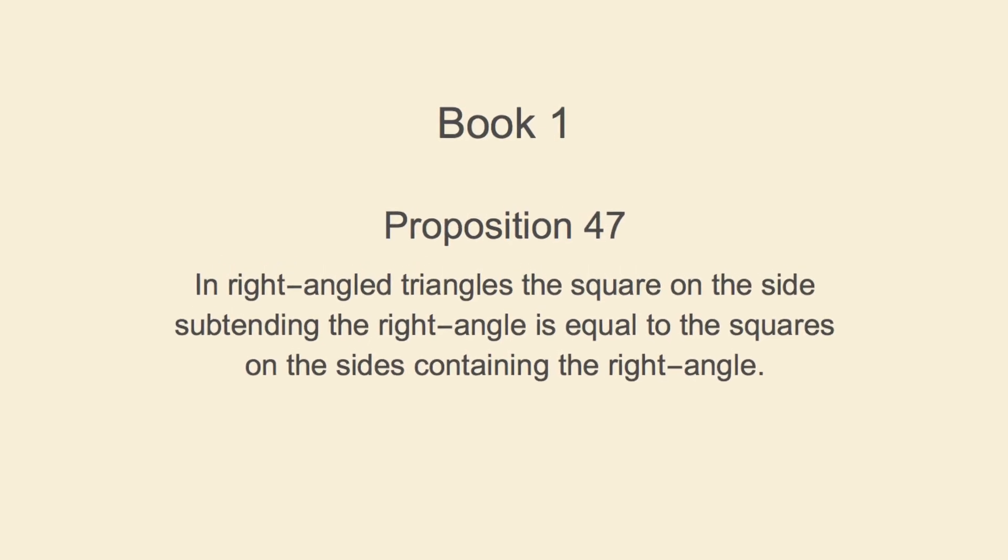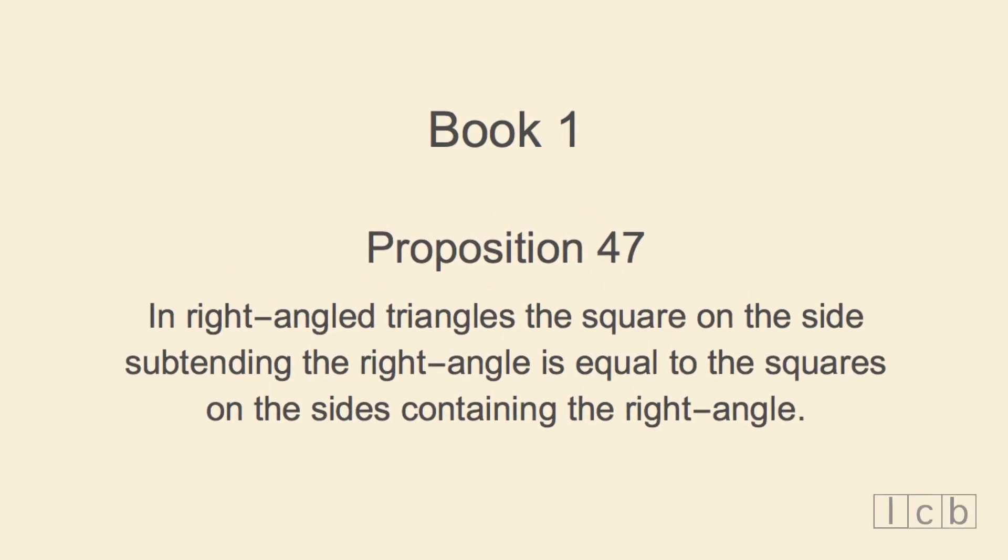Book 1, proposition 47. In right-angled triangles, the square on the side subtending the right angle is equal to the squares on the sides containing the right angle.